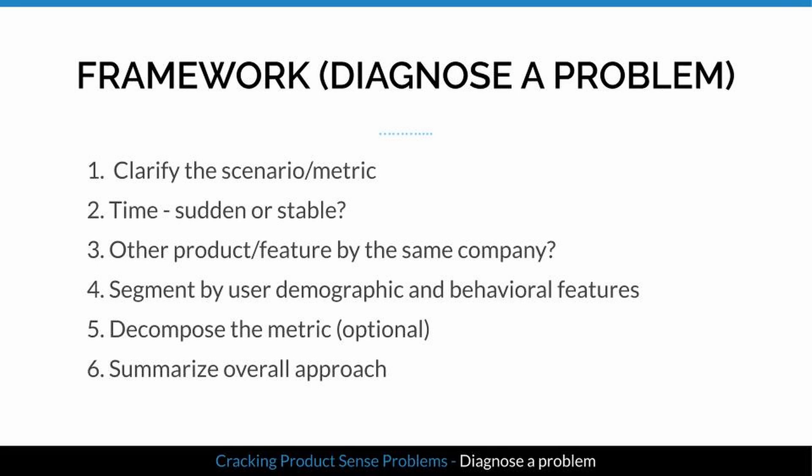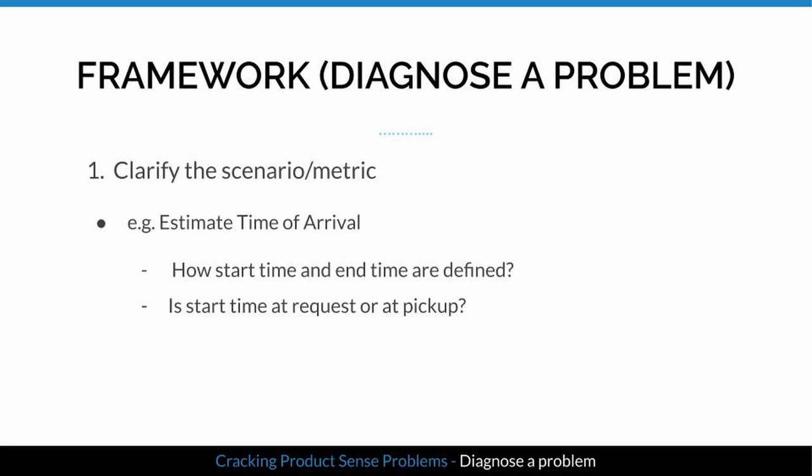The key to answering these questions is to show that you have a systematic approach. There are so many aspects you could talk about, but you don't want the interviewer to feel you're throwing random ideas at them. Here is my framework: there are six steps in total, but not every question needs all of them.